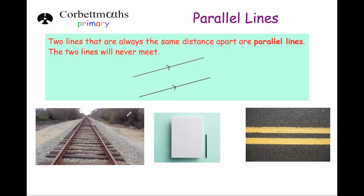Some examples of parallel lines are these railway tracks — they stay the same distance apart. The lines on this page, the lines that you would be writing on, they are parallel to each other. Even these double yellow lines on a road, they stay the same distance apart, so they're parallel.